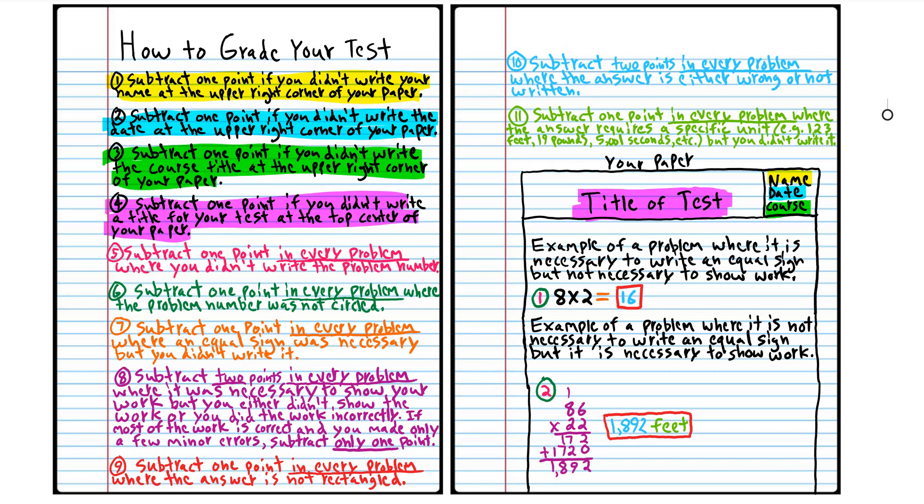The purple says you subtract two points in every problem where the work was not shown. It was necessary to show it, but you didn't show it. In some problems it is not going to be necessary to show work because you're just going to have to write the answer. There's nothing to show. But in some problems there might be some work to show. So in the red it says subtract one point in every problem where the answer is not rectangled. You've got to rectangle your answer.